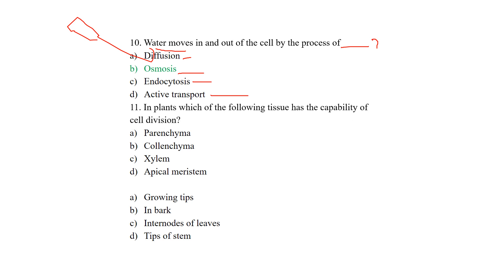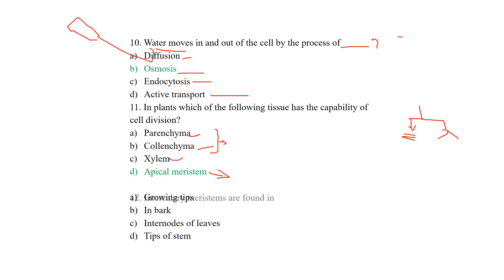In plants, which of the following tissue has the capability of cell division? When learning chapter number 6 on tissues, we learned that plant tissue is categorized into two types: tissues that have the ability to divide, called meristematic tissue, and those that do not. The options parenchyma, colenchyma, and xylem are permanent tissues that have lost the ability to divide. The remaining option is apical meristem, which is a type of meristematic tissue, so the answer is apical meristem.